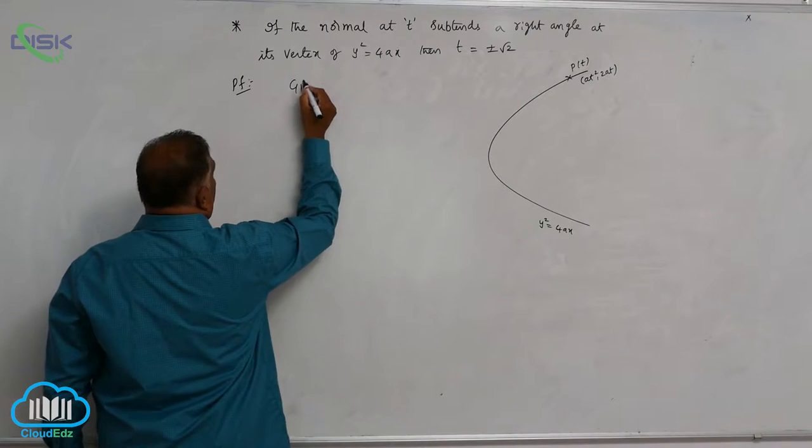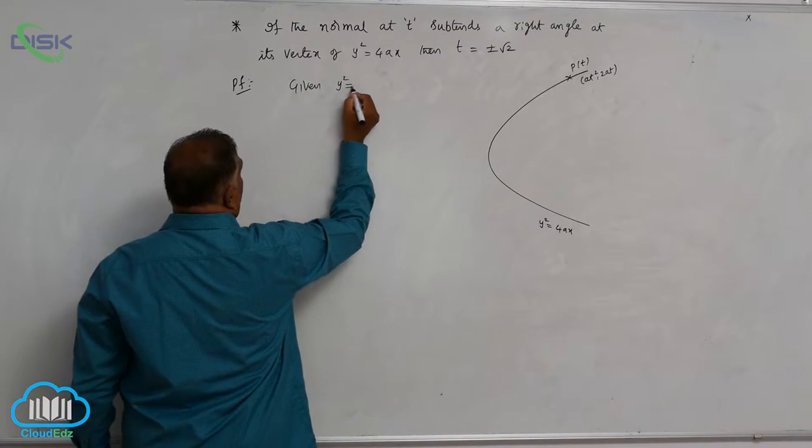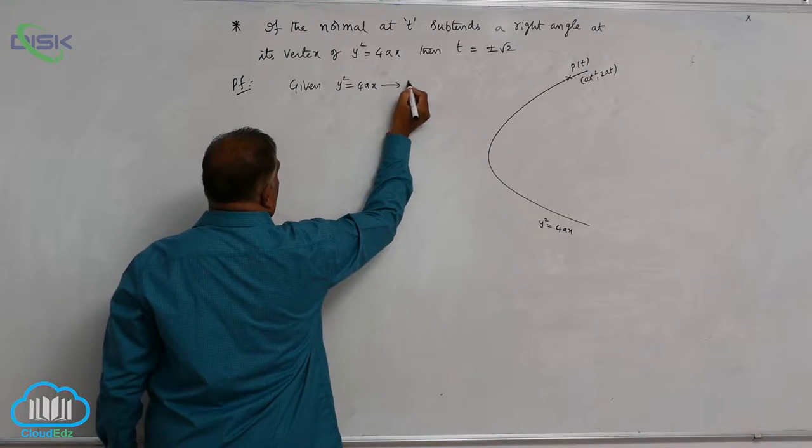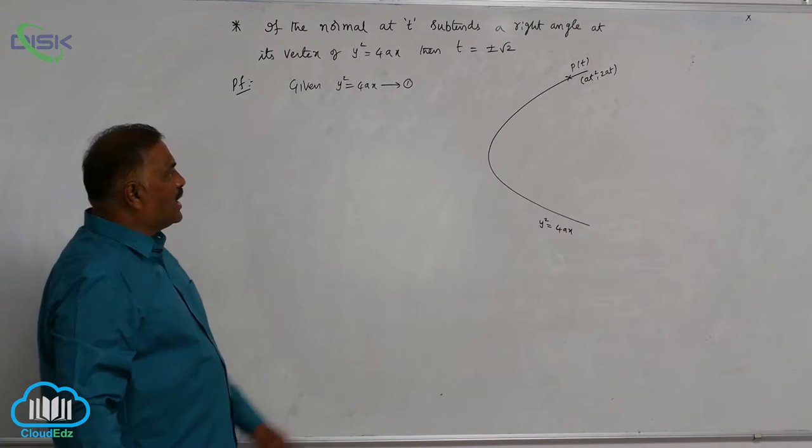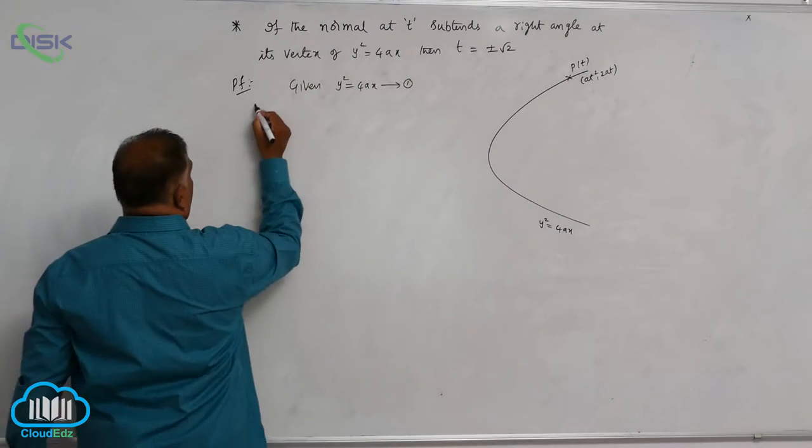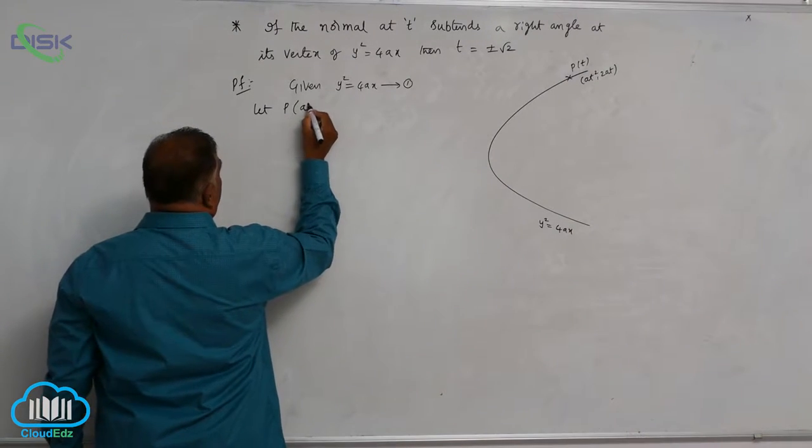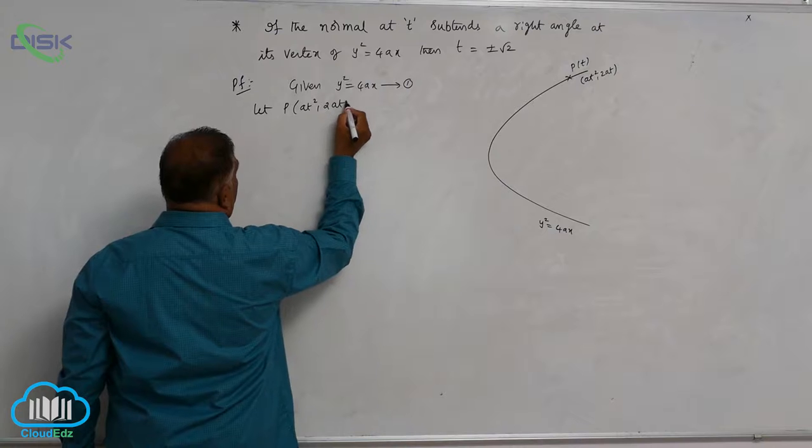Now, given y square equal to 4ax, call it equation 1. Any point can be taken as, let P at square comma 2at be any point.